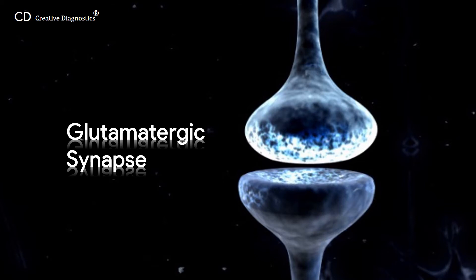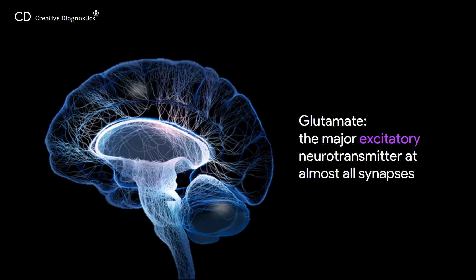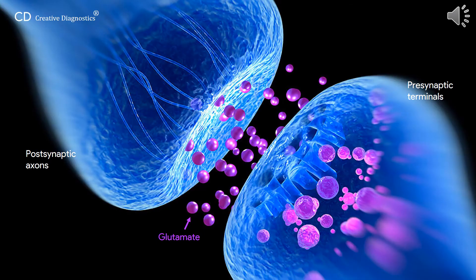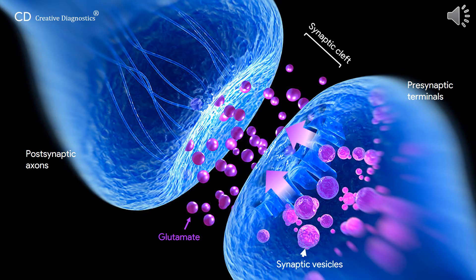Glutamate is the major excitatory neurotransmitter at almost all synapses in the vertebrate central nervous system. Glutamate is packaged into synaptic vesicles in the glutamatergic presynaptic terminals and released into the synaptic cleft through the fusion of synaptic vesicles to the membrane at the active zone.